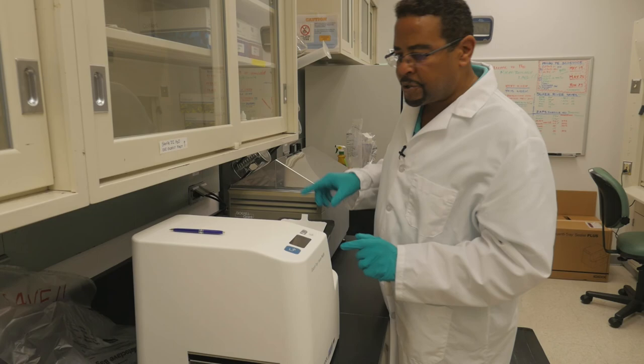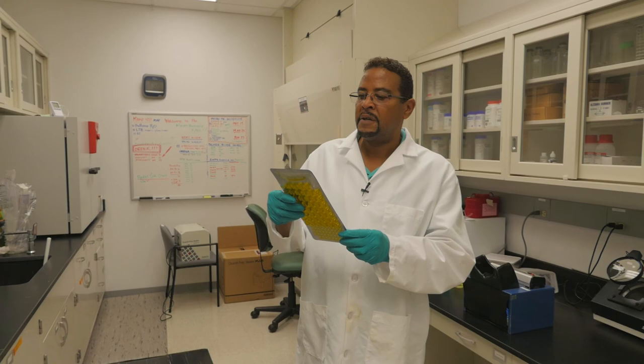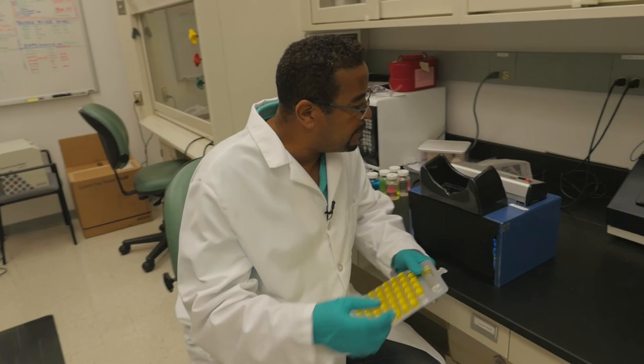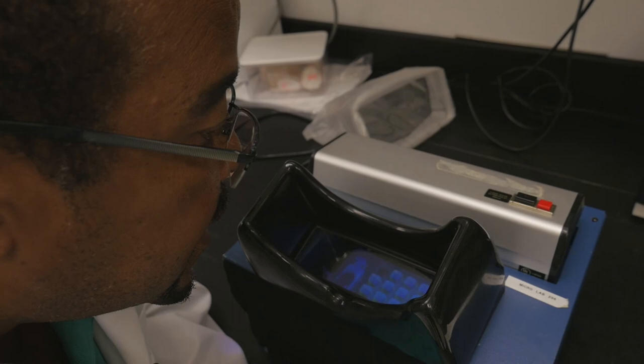Once it goes through the sealer, I'll be putting it into the incubator at 35 degrees. And if it turns yellow, like this, that means bacteria is there, but it doesn't mean E. coli. So I would have to go further and check and see if anything is fluorescent. And we do have some fluorescent wells, which means positive for E. coli.